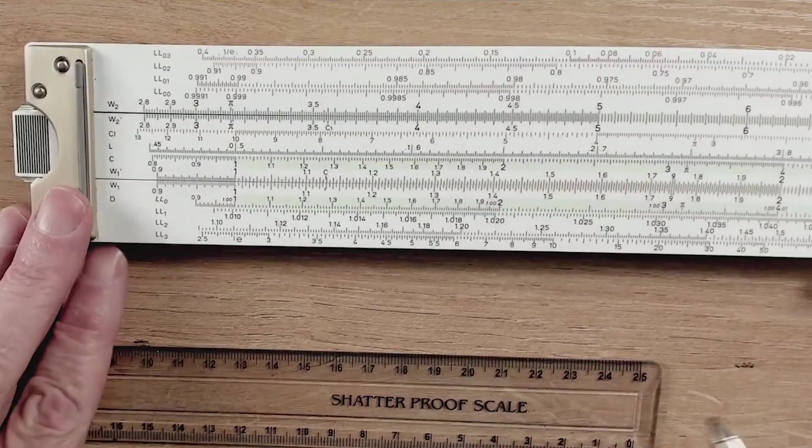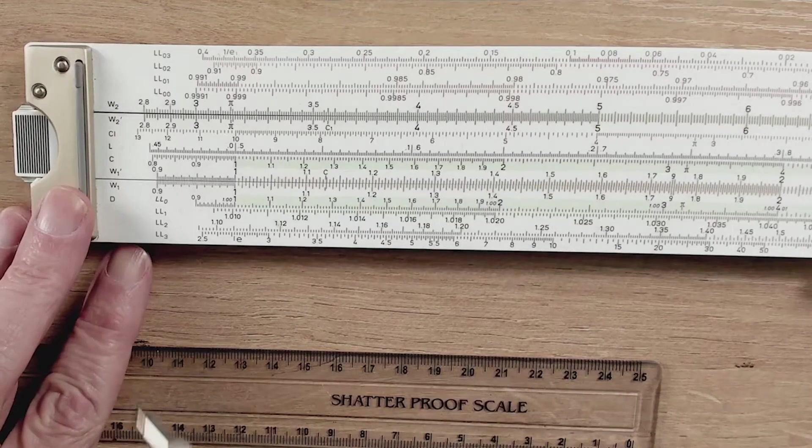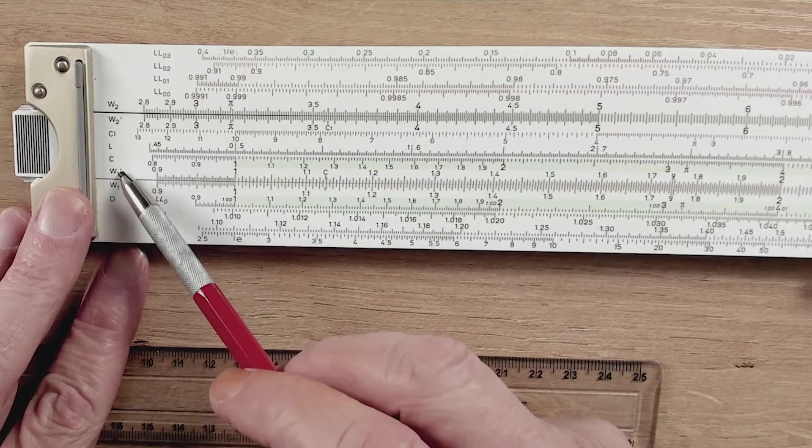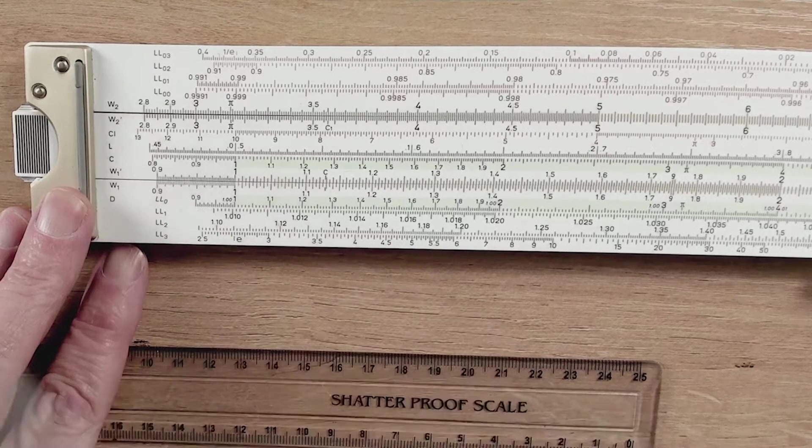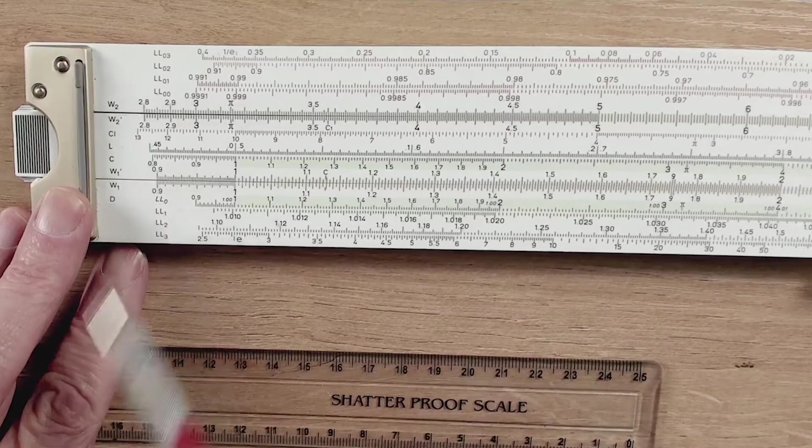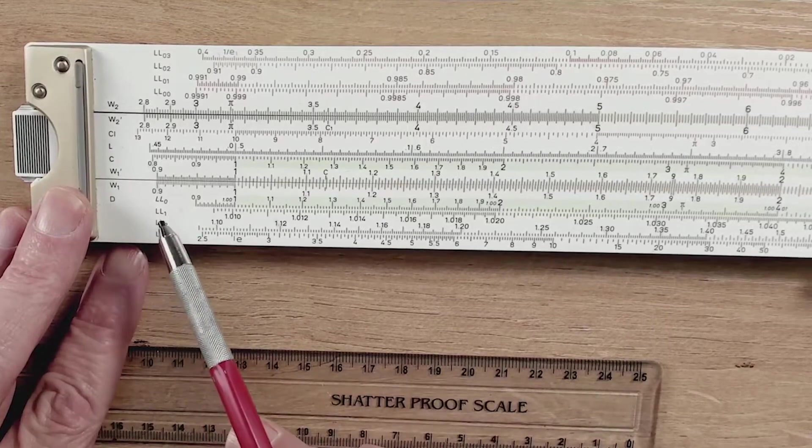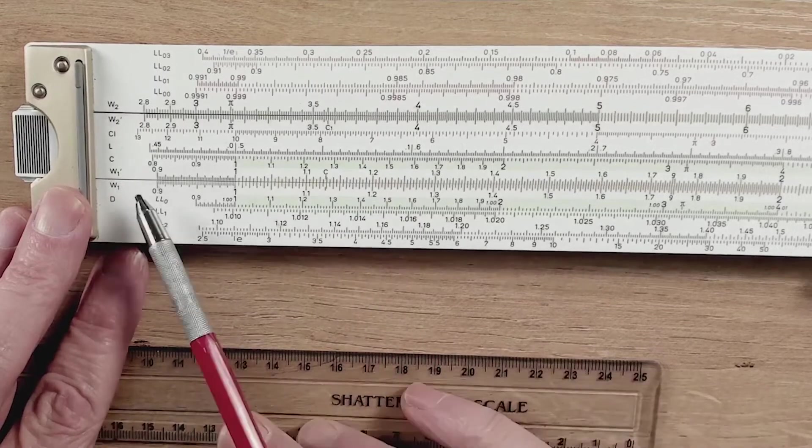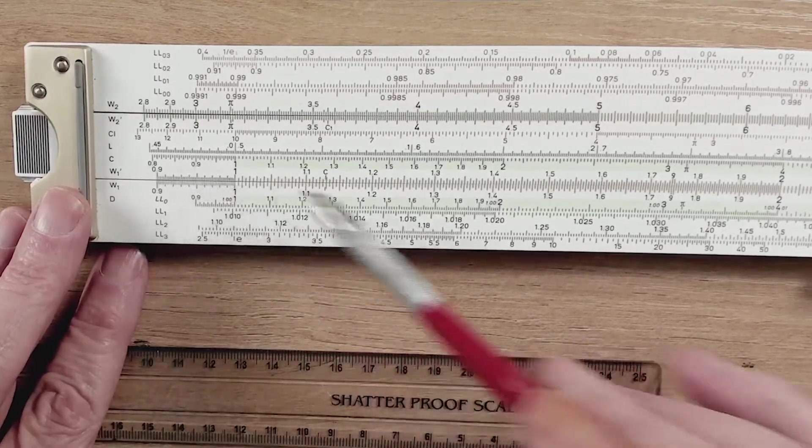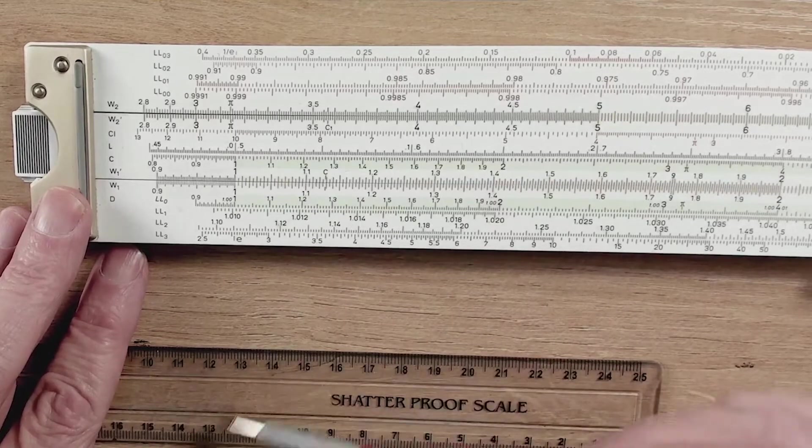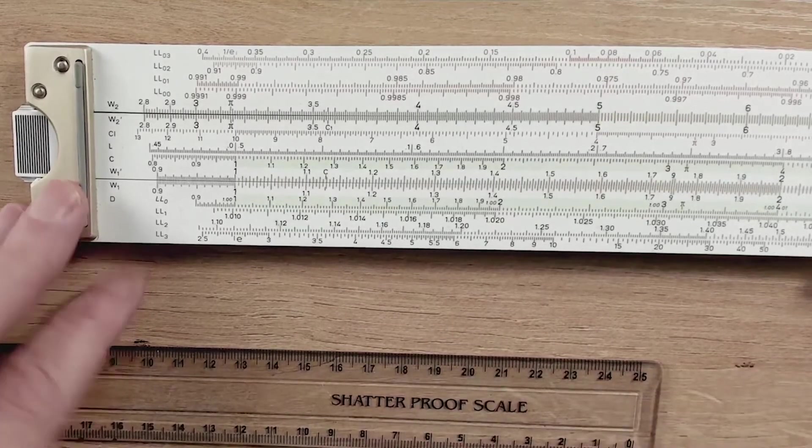Now we also have a unique set of scales on the 283 and that's these W scales. We have W1, W1 prime. We have W2 and W2 prime. Now the purpose of this is very much like those cube root scales that we saw on the Picket slide rule. This is a split scale. And when you use this particular scale, you turn this 10 inch slide rule into the accuracy of a 20 inch slide rule. Let me show you.